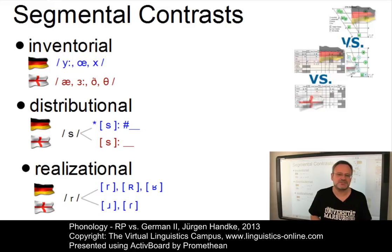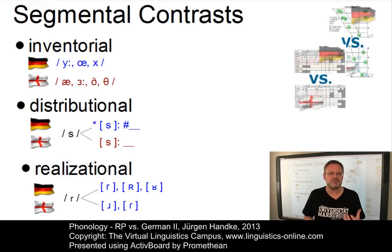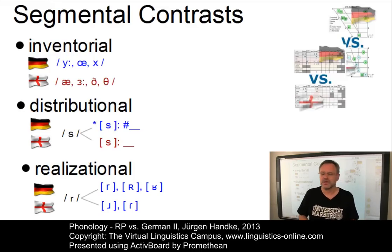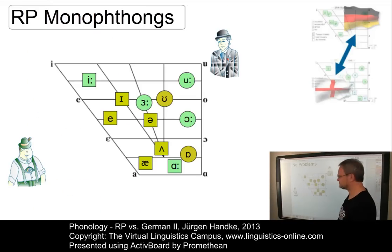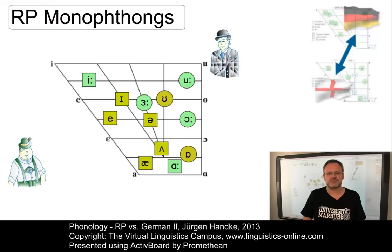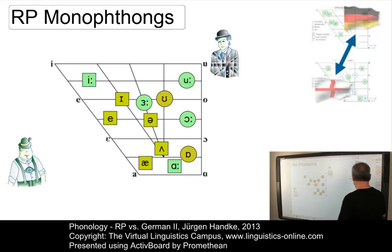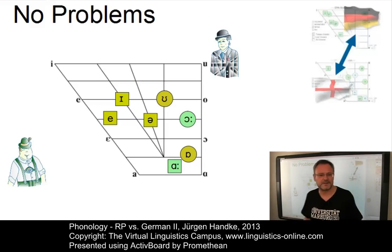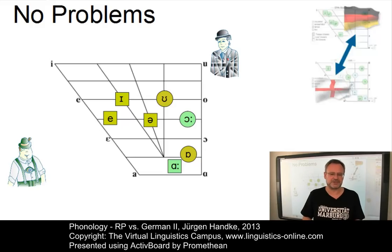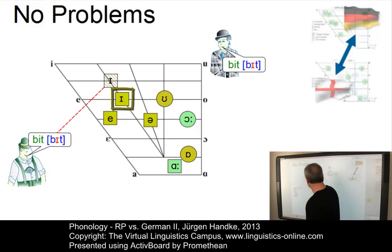Let us inspect the segmental differences between both languages in a contrastive manner in order to find the precise remedial actions to overcome these segmental difficulties. Let us start with the monophthongs. Of the twelve RP monophthongs, the following RP phonemes are unproblematic for German learners of RP — they are almost identical with their German value and do not require any remedial action. Let us listen and produce the German values. There is a short I as in BIT.